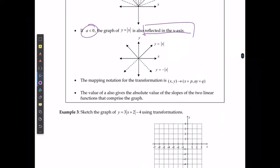The mapping notation that we use is if the original had the points of x and y, the new one is going to be x plus P and then A times y plus Q. And the value of A also gives the absolute value of the slope, so the two linear functions that comprise the graph.